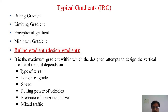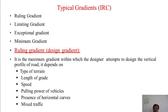There are four types of gradient: ruling gradient, limiting gradient, exceptional gradient, and minimum gradient. The ruling gradient is usually the design gradient that the highway engineer will use when designing a vertical profile. It is the maximum gradient within which the designer attempts to design the vertical profile of the road. It depends upon type of terrain, length of grade, speed, pulling power of the vehicle, presence of horizontal curve, and mixed profile.